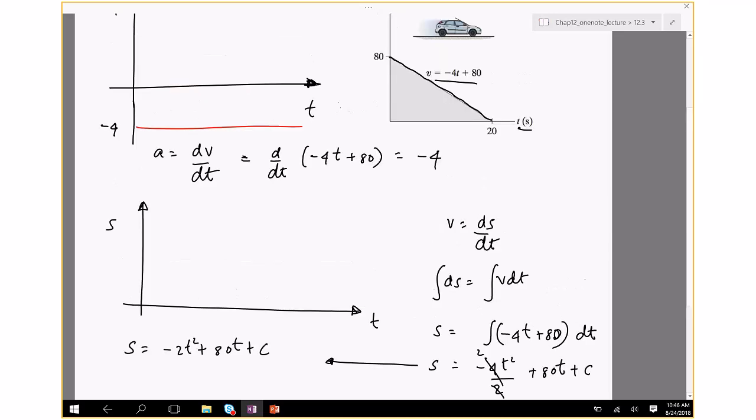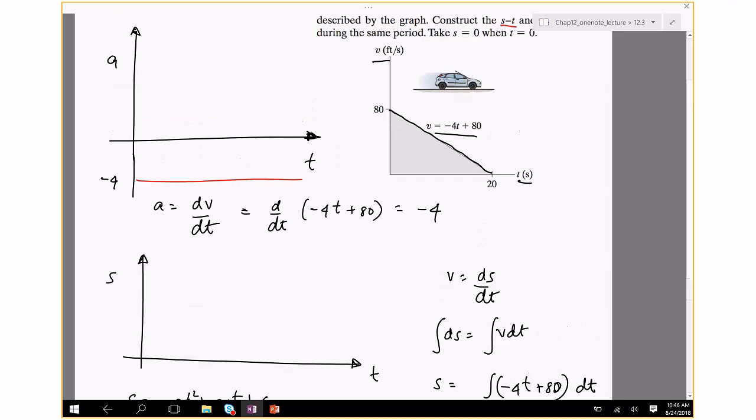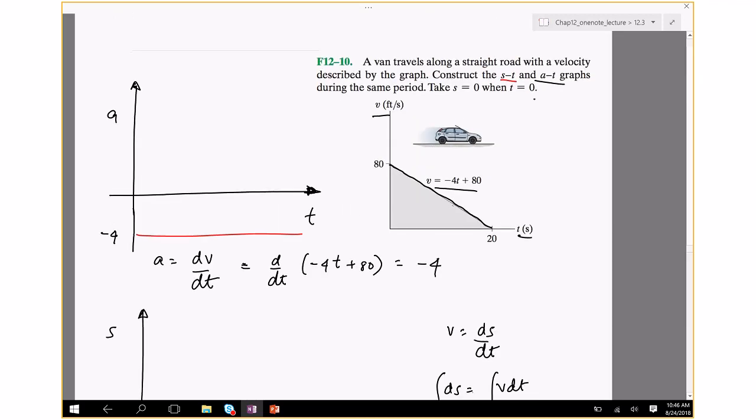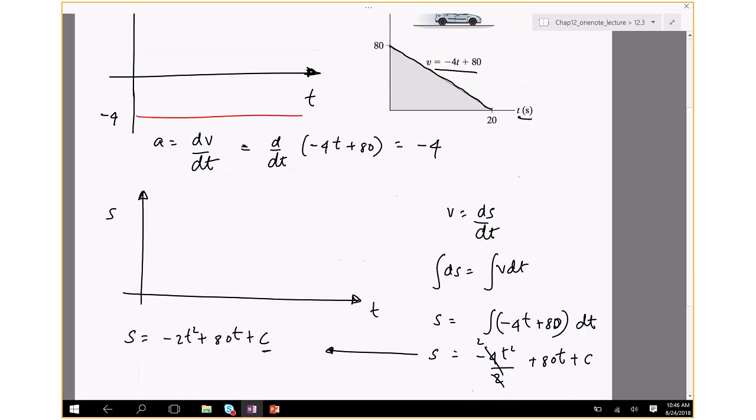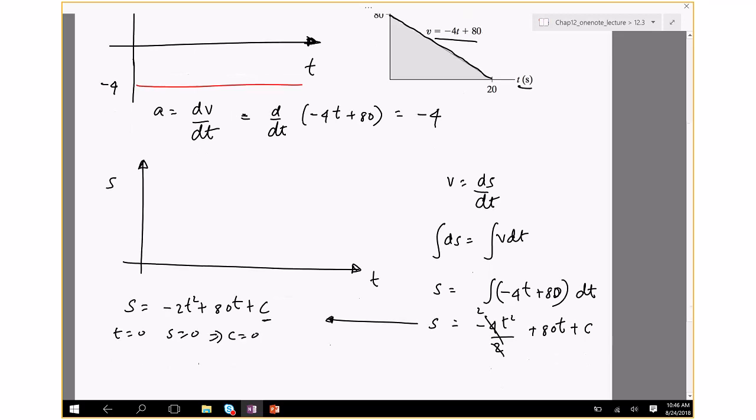So my expression for s is s equals minus 2t squared plus 80t plus c. In order to find this constant c, let's use the information that when s equals 0, the time t is 0. So put t equals 0, s equals 0. If you put that in the expression, then you get c equals 0. So s is minus 2t squared plus 80t. What we have to now do is we've got to plot this expression on the plot.